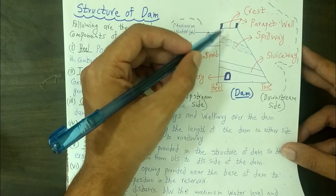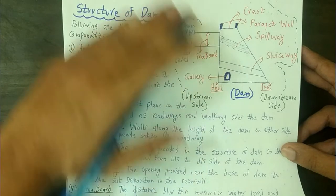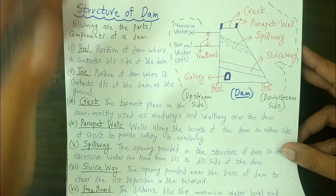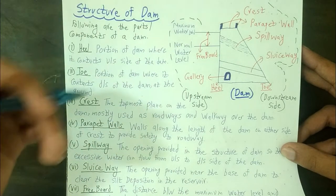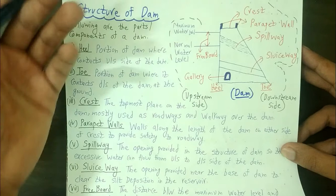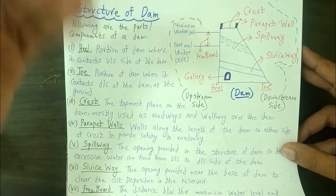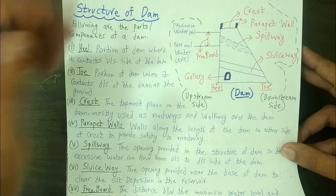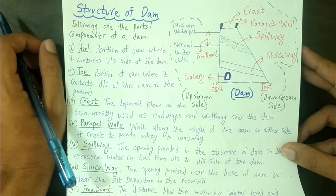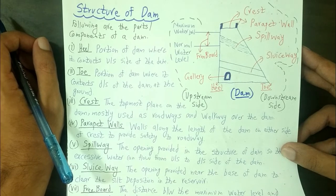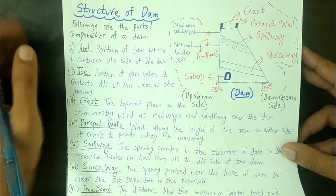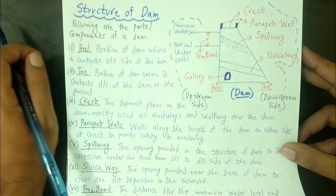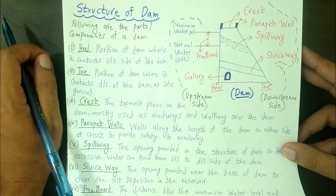The crest is used as a road on the dam construction where vehicles travel. It can be used as a highway over which vehicles travel. So basically the crest is the uppermost part of the dam and it is provided for walkways or roadways.